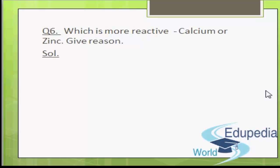The next question asks: which is more reactive, calcium or zinc, and give a reason. Again, this question is related to the activity series of metals. Calcium appears above zinc in the activity series, so calcium is more reactive than zinc.